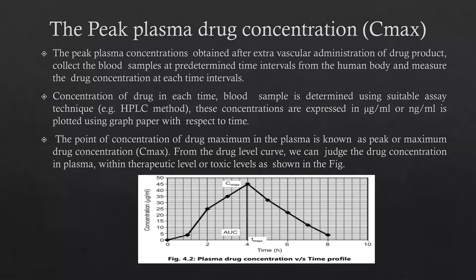The point of maximum drug concentration in the plasma is called the peak or maximum drug concentration, which is referred to as Cmax. On the graph, which plots plasma concentration of drug versus time profile, Cmax is the point where drug concentration is maximum in the plasma. From this drug level curve, we can assess whether the drug concentration in plasma is within a therapeutic level or toxic level.